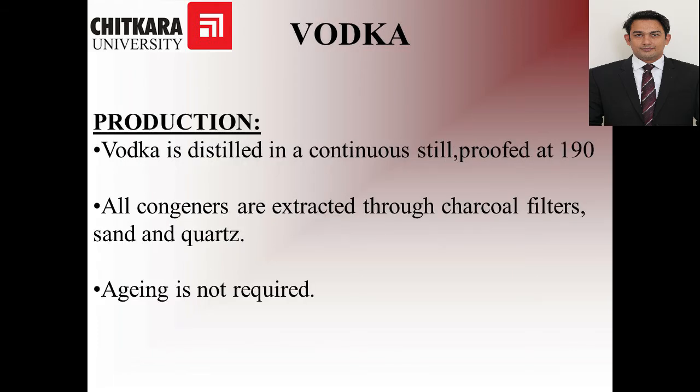Production of vodka is almost similar to the process of whiskey, wherein the grain goes through steeping, then germination, then malting, kilning and mashing. All these steps are similar to whiskey, except when it reaches the process of distillation. The process uses patent still distillation and the beverage is approved at 190 degrees. All the congeners are extracted through charcoal filters, scents and quartz. Aging is not at all required in vodka.